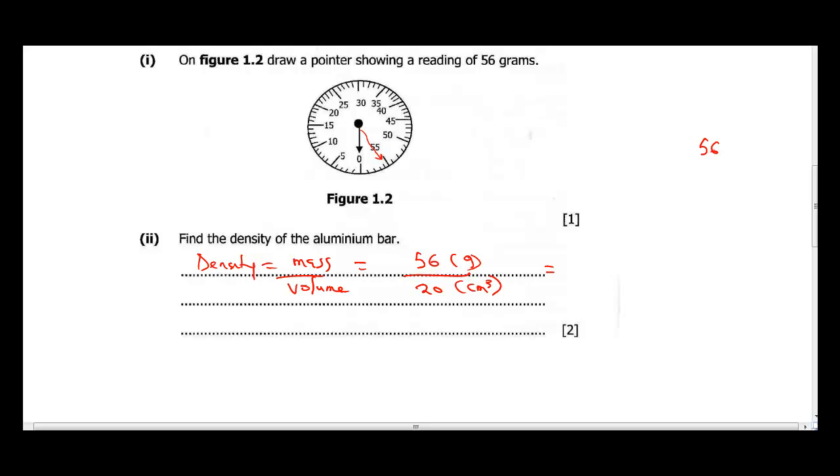So 56 divided by 20. When you reduce 56 over 20, 2 into 20 is 10, 2 into 16 is 8. You can also do 2 into 20 is 5 and 2 into 56 is 28, so 28 divided by 10. 5 into 14 gives 2.8. So density is equal to 2.8 grams per cm cube. That's the final answer.